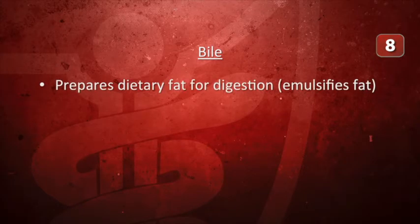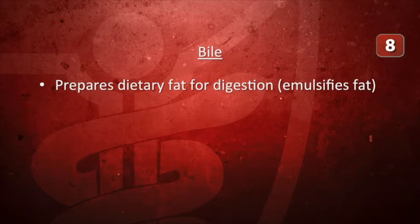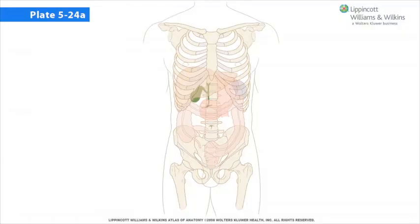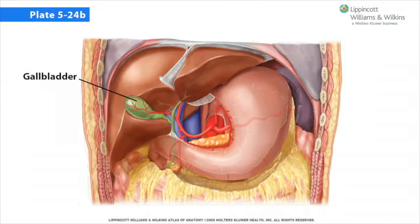Bile is important for two main reasons: it prepares dietary fat for digestion by emulsifying it — breaking it into smaller particles that may be digested by pancreatic enzymes — and it is responsible for cholesterol homeostasis. Not only do hepatocytes convert cholesterol into bile, but excess cholesterol may be solubilized in the bile and excreted in the feces. The gallbladder is a hollow, often pear-shaped organ that occupies a fossa on the visceral surface of the liver to the right of the ligamentum teres. The serosa of the gallbladder blends with Glisson's capsule of the liver, anchoring it. Peritoneum covers the gallbladder except for the part in contact with the liver.